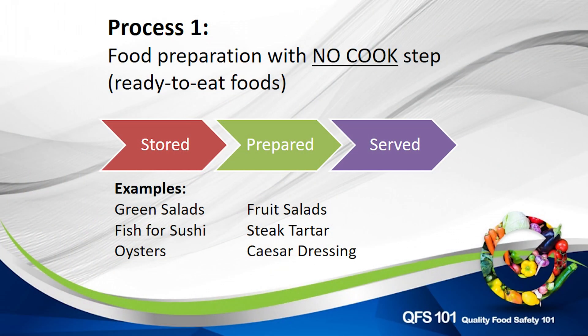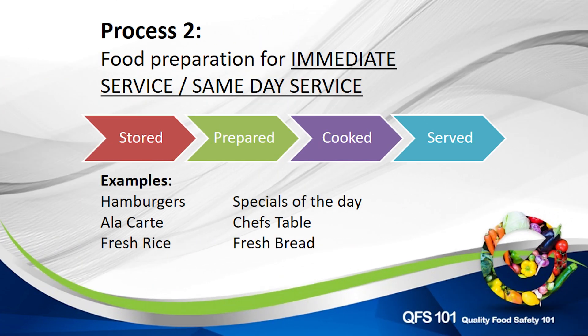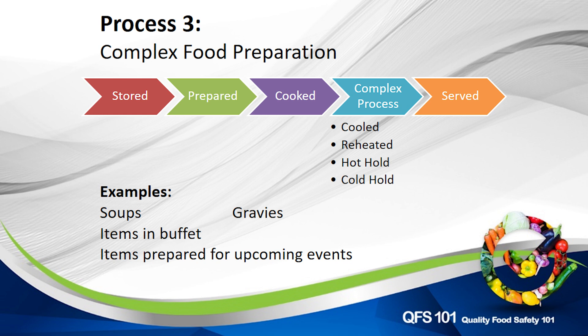There are three types of processes which cover the whole industry of catering. Process number one is the no cook step, which means all products that are not being cooked on the premises — like salads, or sauces purchased from outside like ketchup — all these come under this step. The second one is immediate serve, or à la carte — like burgers or freshly cooked rice — and this process includes cooking. The third one is complex food preparation, which means that after cooking, you will be doing any one of four steps: cooling, reheating, hot holding, or cold holding. Products like soups, gravies, and pretty much anything in a hotel buffet fall under this complex food preparation.